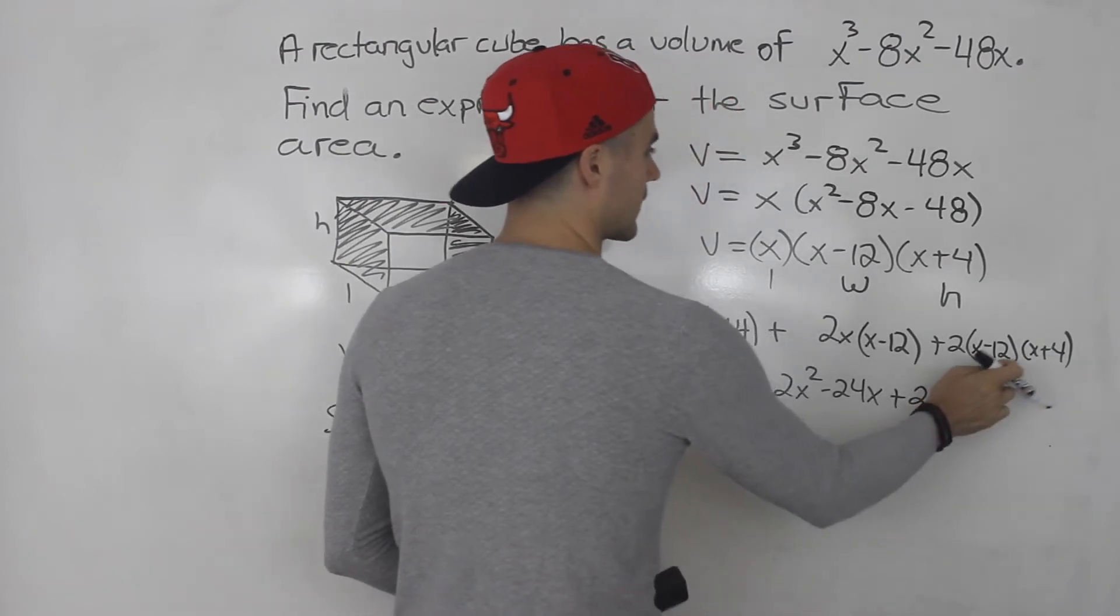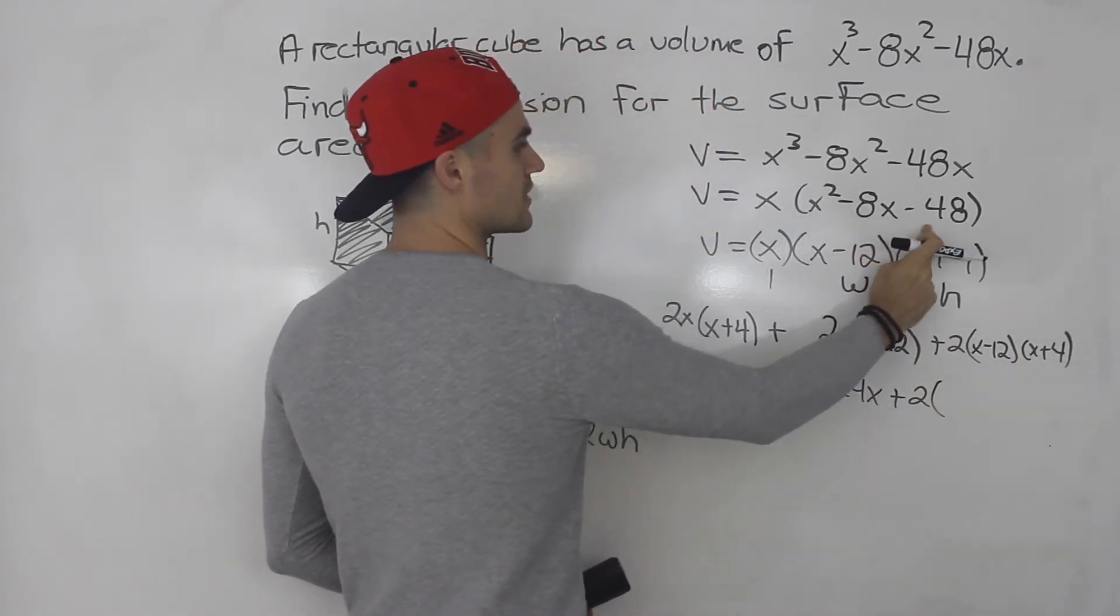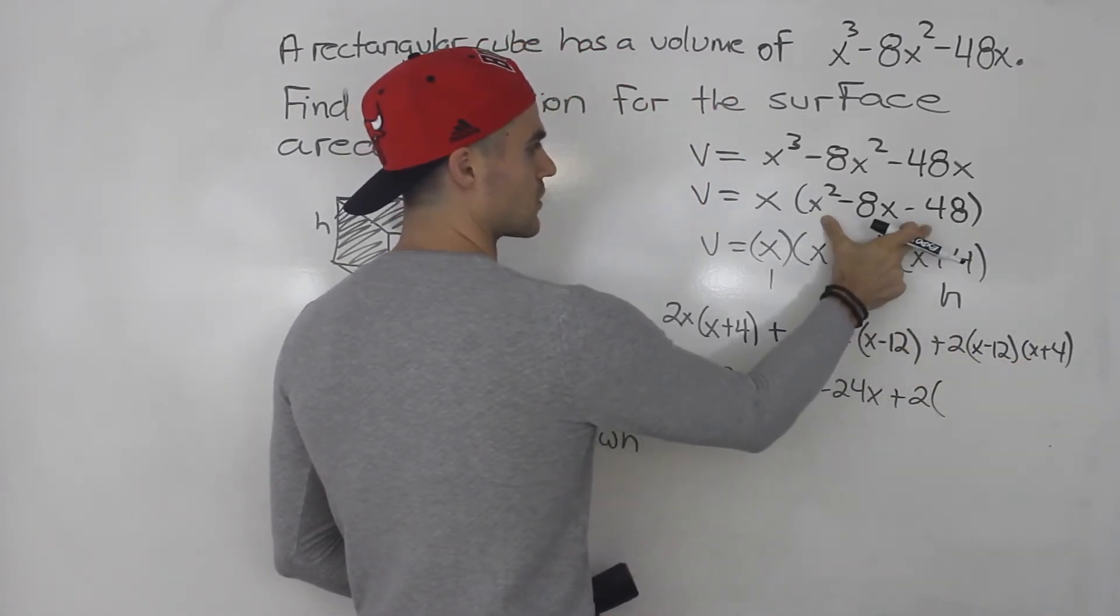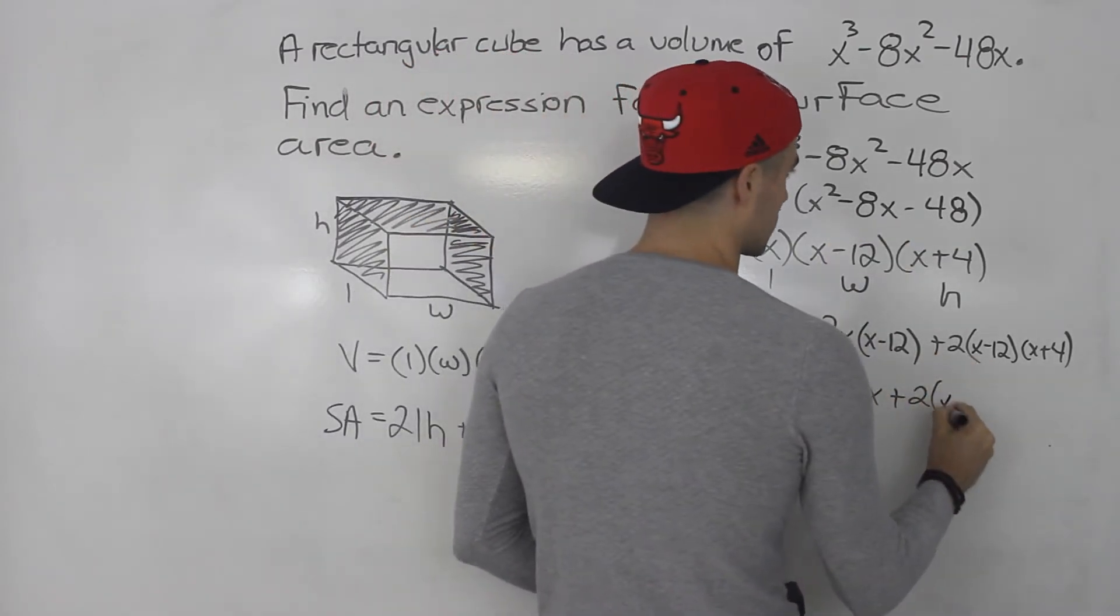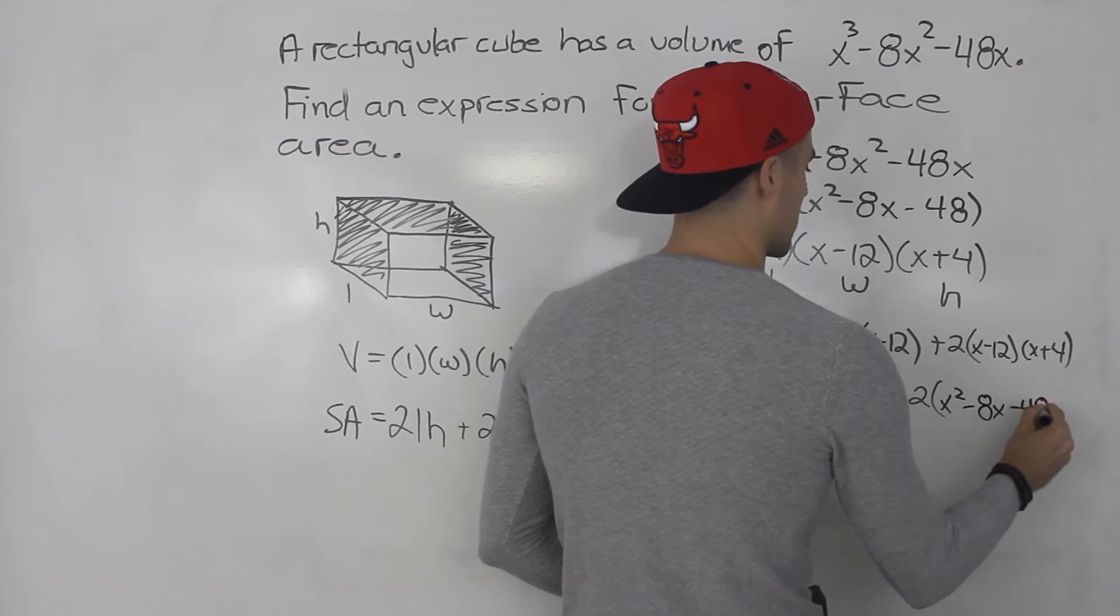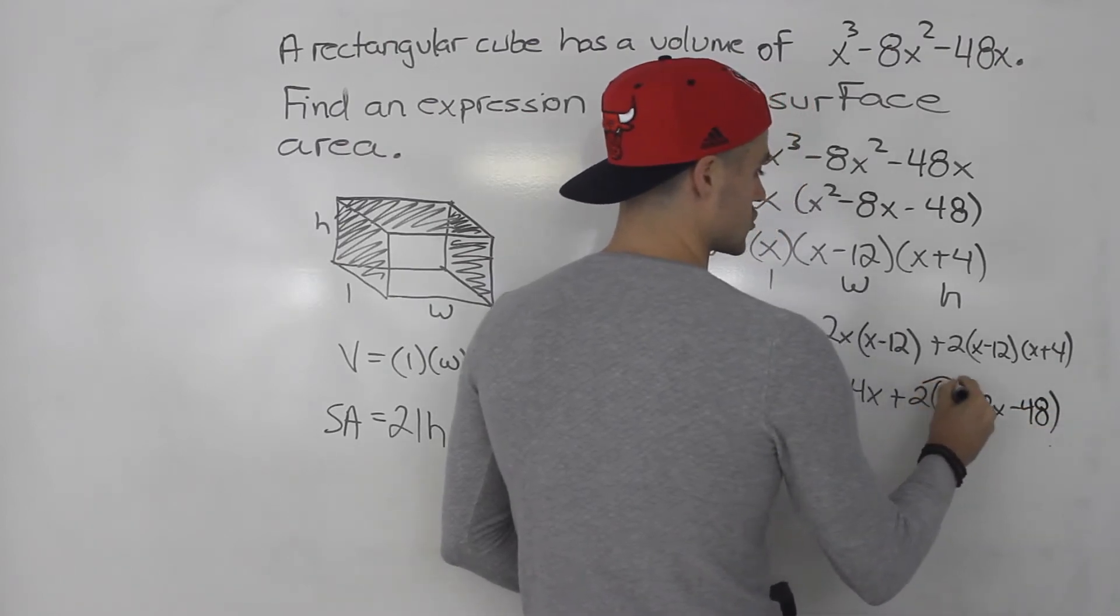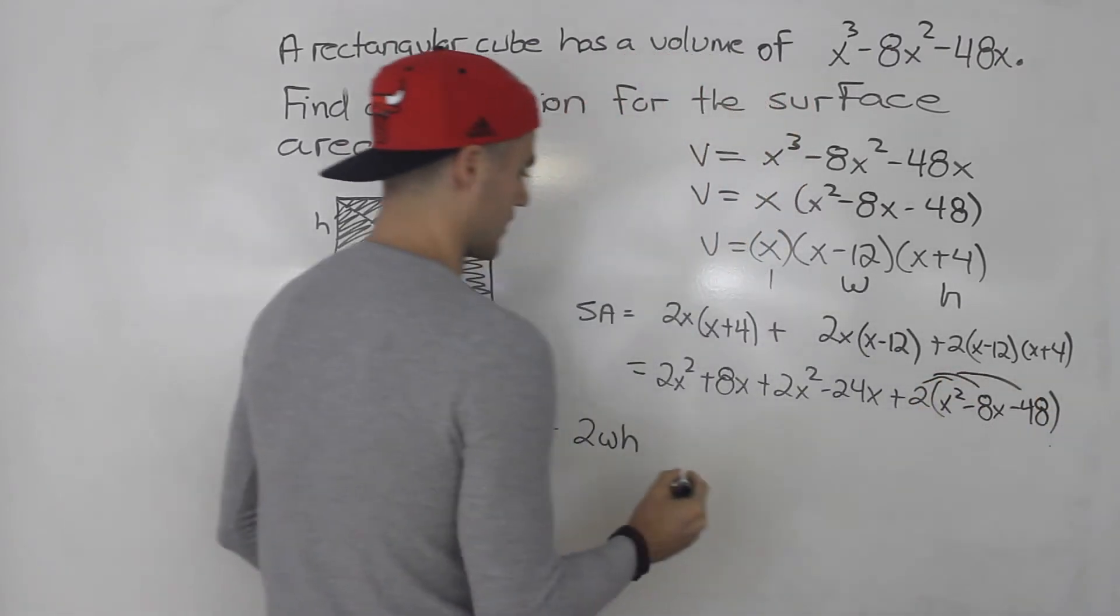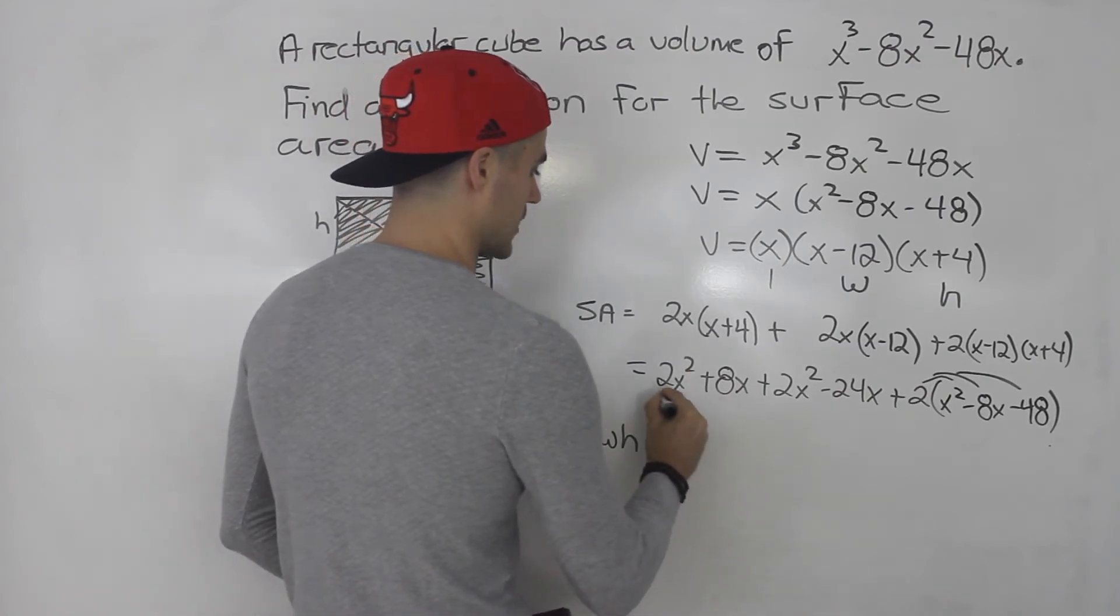Then we could FOIL out these two brackets here. And that's actually equal to this. x minus 12 times x plus 4 is that bracket. So we could rewrite that x squared minus 8x minus 48. Then we'd have to distribute that 2 inside the bracket. And then over here, let's collect some like terms.